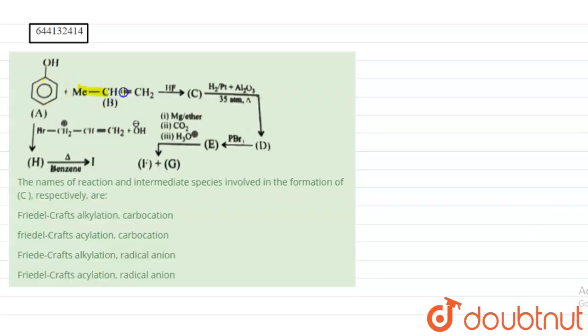Hello students, in the given problem, phenol is reacting with propene in the presence of HF, and the compound formed is C. We have to answer the name of reaction and intermediate species involved in the formation of C.